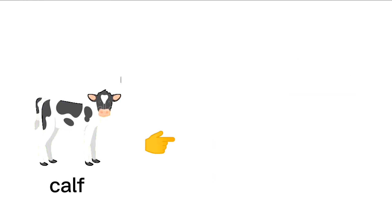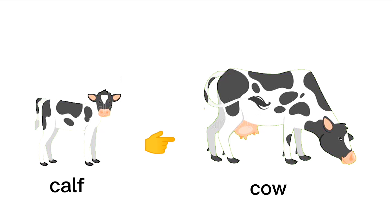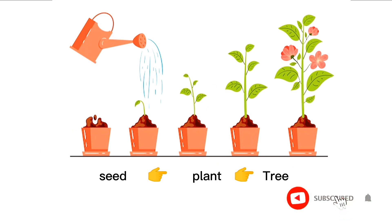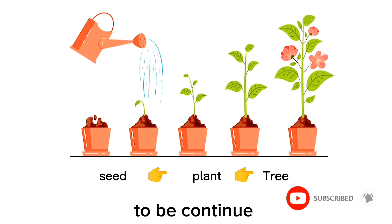A calf grows into a cow. A seed grows into a plant, which then grows into a huge tree.